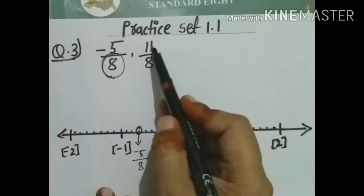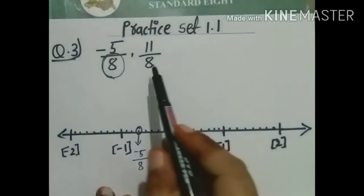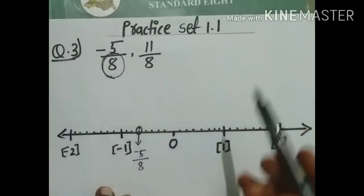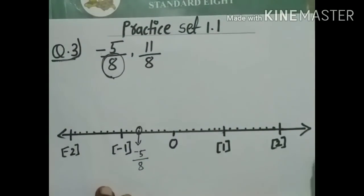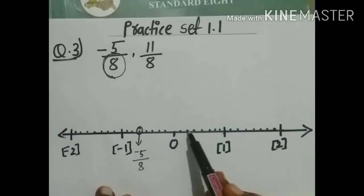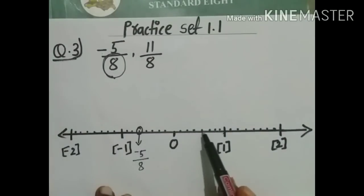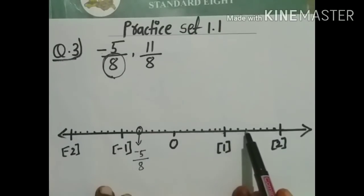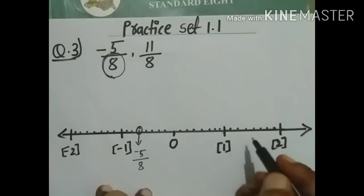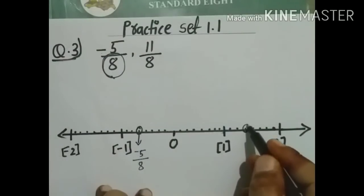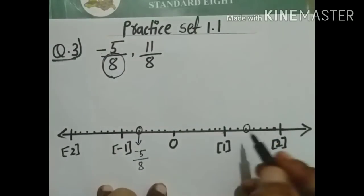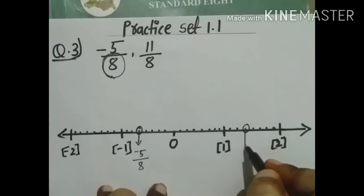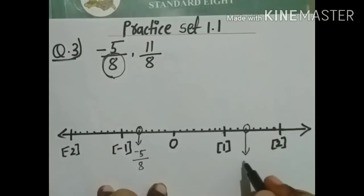Next rational number is 11 upon 8 — it is positive, so it is to the right of 0. Start from 0 going right and count: 1, 2, 3, 4, 5, 6, 7, 8, 9, 10, 11. So 11 is here — do the circle and write 11 upon 8.